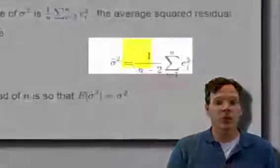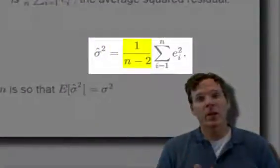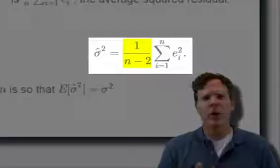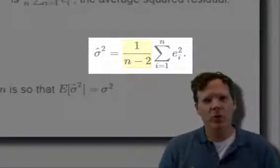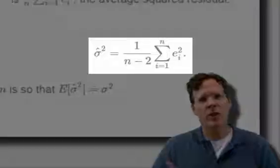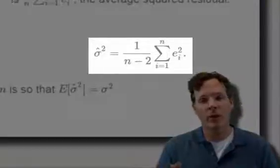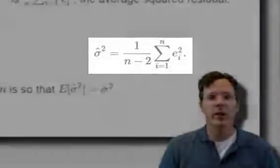Now, most people use n minus 2 instead of n, so it's not the average squared residual. It's kind of like the average squared residual. So for large n, the difference between 1 over n minus 2 and 1 over n is irrelevant, but for small n it can make a difference.